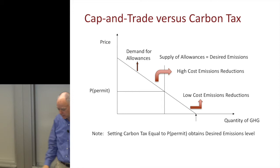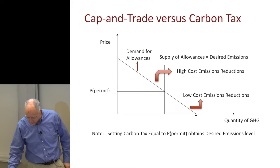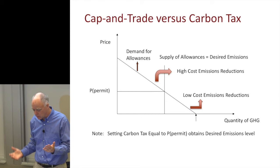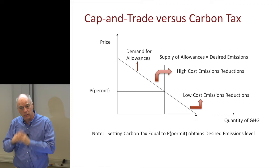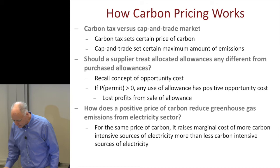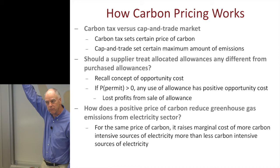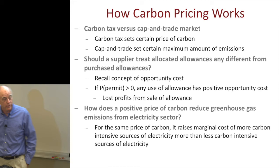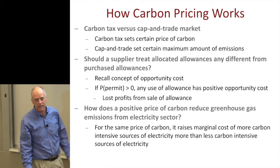The key difference between carbon tax and cap-and-trade is this: with a carbon tax, we have price certainty — the carbon price is fixed. With cap-and-trade, we have quantity certainty. One big challenge with the abatement supply curve is that it shifts with fossil fuel prices. If gas or oil prices fall in half, demand for fossil fuels rises, baseline emissions increase, and abatement becomes much more expensive — the curve shifts out.